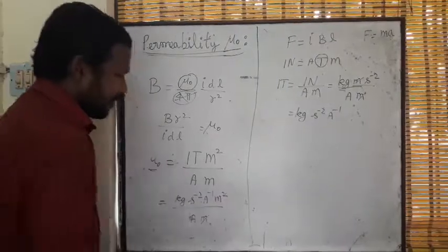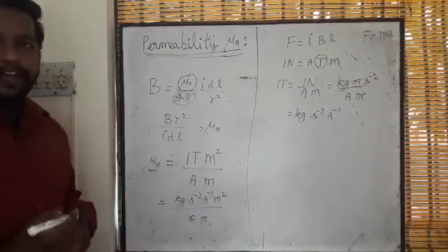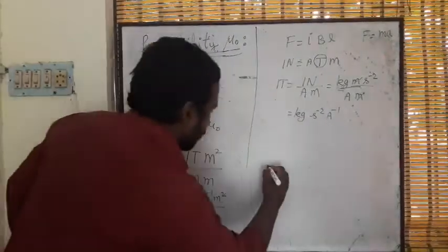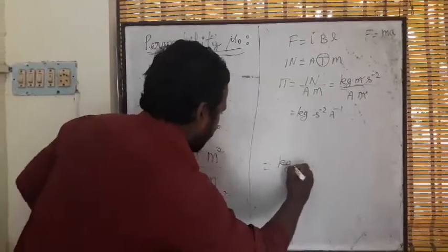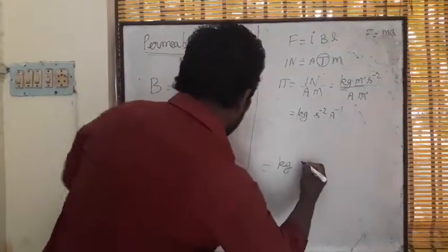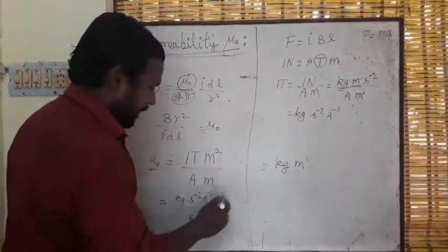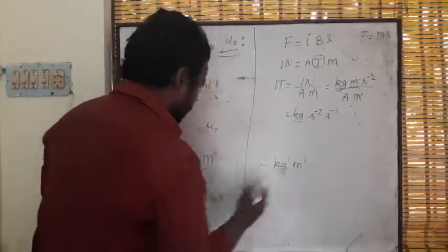This gets cancelled. Ampere I am taking as numerator, I will get minus ampere. KG, it is meter power 1 because meter squared meter gets cancelled, I got meter power 1, KG power 1, second as minus 2.